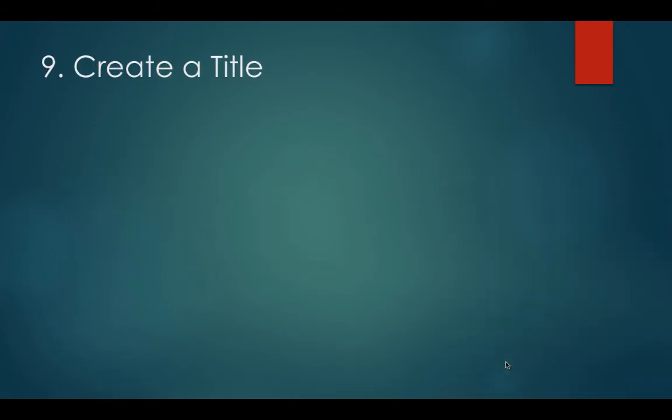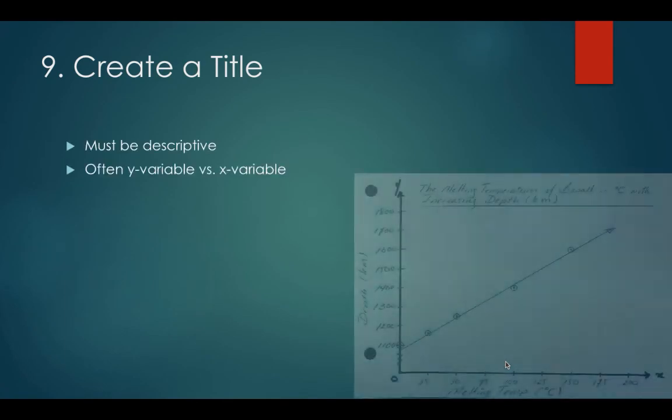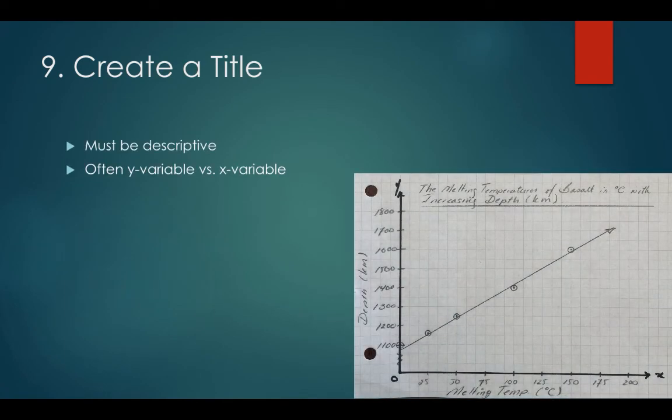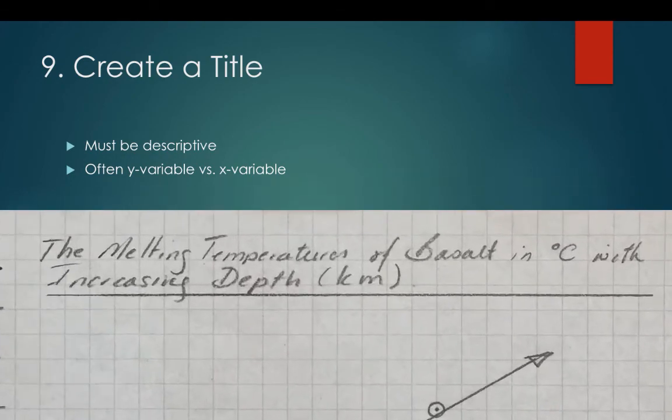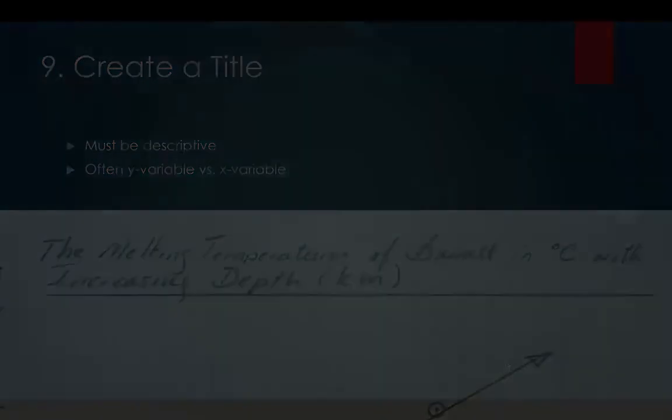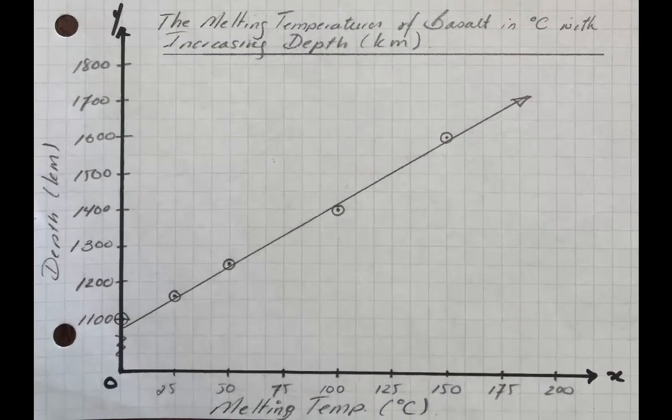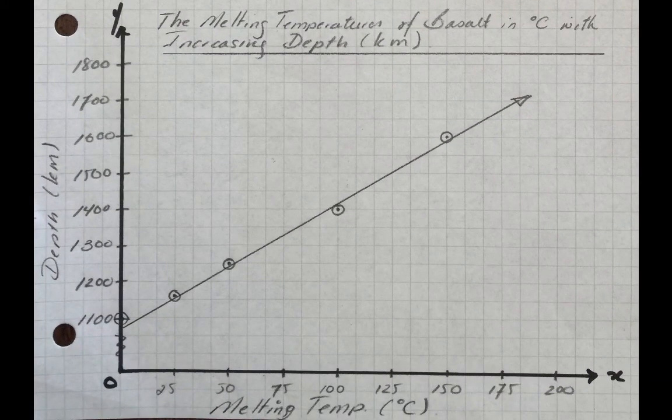Last but not least is a title. It must be descriptive and often it is the y variable versus the x variable. In this case, our title is melting temperature versus increasing depth. Now that you've finished making a graph, you should refer back to the acronym DATA to ensure that you haven't missed anything important.